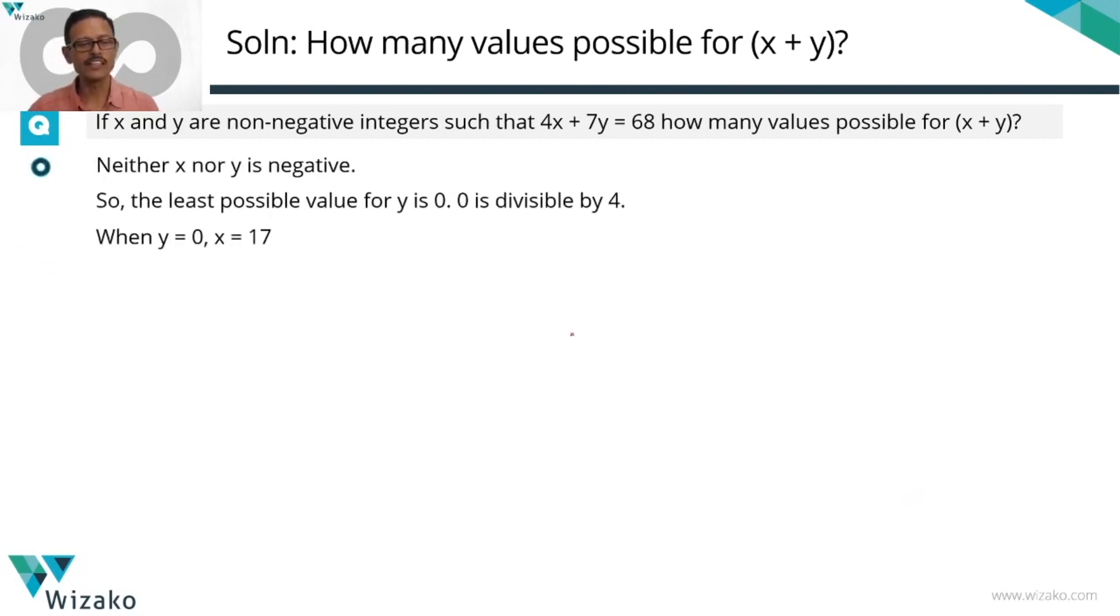So having got this and we know that these are non-negative integers, the least value that y can take is 0. What's the value of x then? x equal to 17. So x plus y will become 17 in this case.